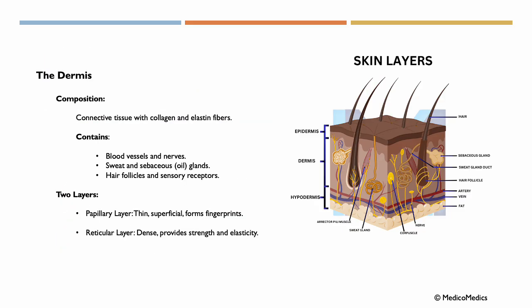Now let's continue to the dermis. Its composition is connective tissue with collagen and elastin fibers. It contains our blood vessels and nerves, sweat and sebaceous or oil glands, hair follicles and sensory receptors. It has two layers. The papillary layer, which is thin, superficial, and forms fingerprints. And the reticular layer, which is dense, provides strength and elasticity.